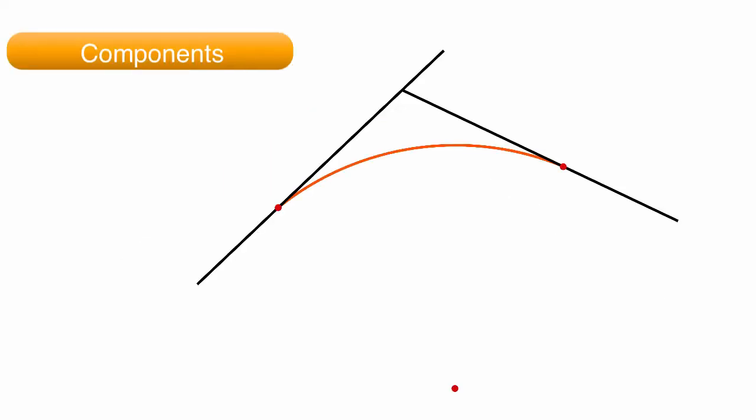There are several parts or components associated with a horizontal curve. The intersection of the two straight segments of the road is known as the point of intersection, or PI.